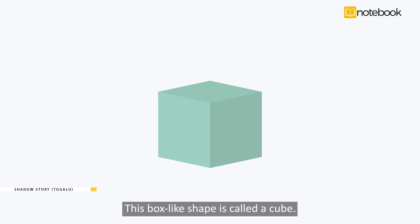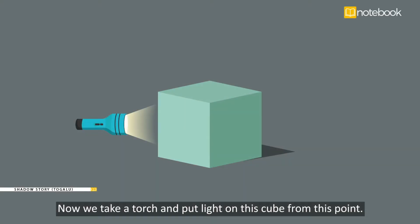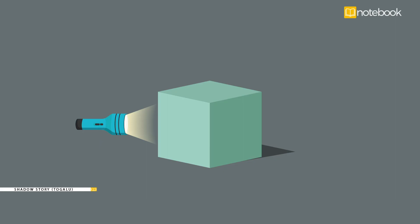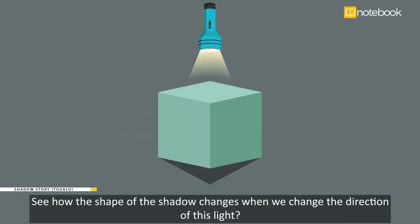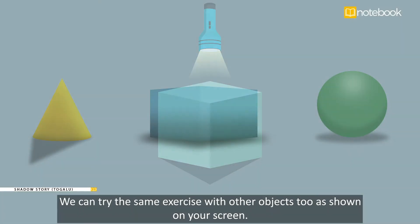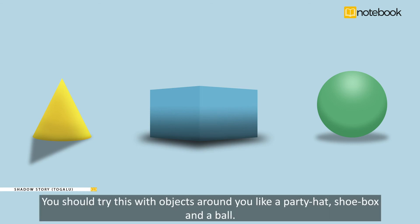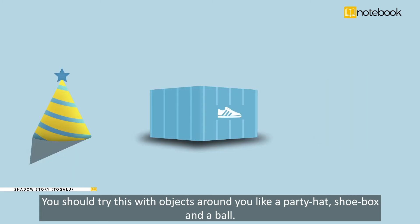This box-like shape is called a cube. Now we take a torch and put light on this cube from this point. Notice how the cube now forms a shadow. But what happens when we place the torch here? See how the shape of the shadow changes when we change the direction of the light. We can try the same exercise with other objects too, as shown on your screen. You should try this with objects around you like a party hat, shoe box, and a ball.